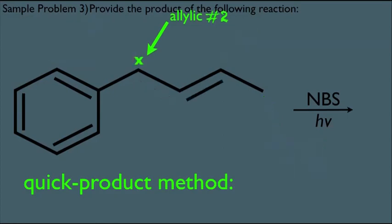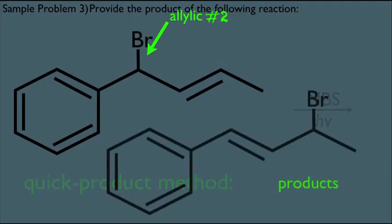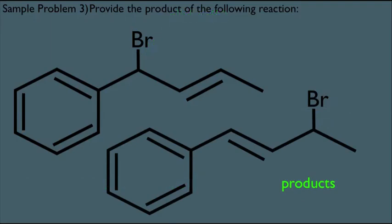go back to the original allylic radical. Replace him with the BR. Do your quick resonance move to get the second radical and replace him with the BR. And you end up with these two products. So notice how quickly you can pull this off on an exam.